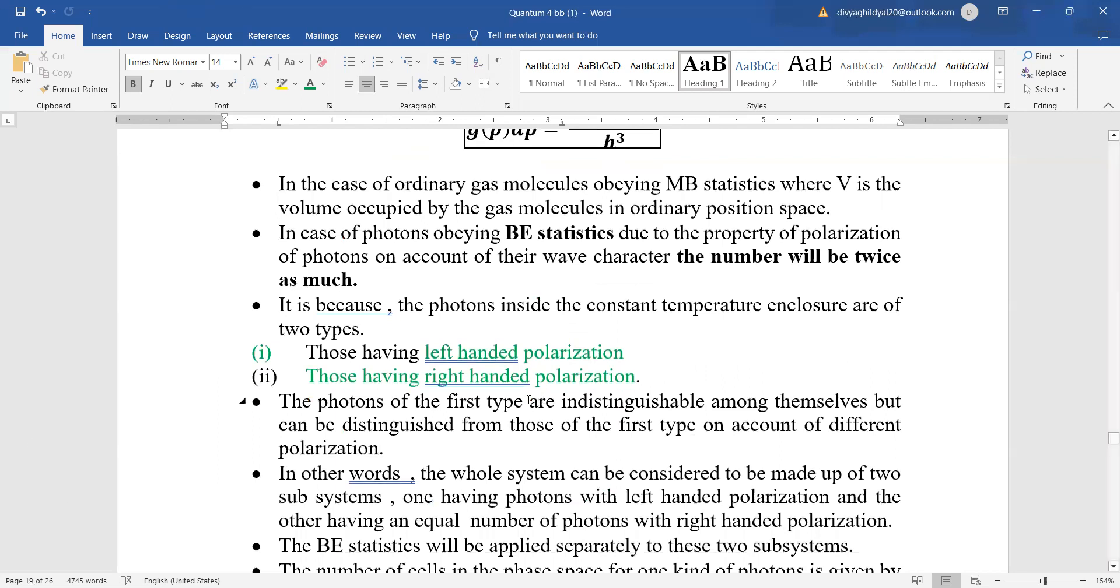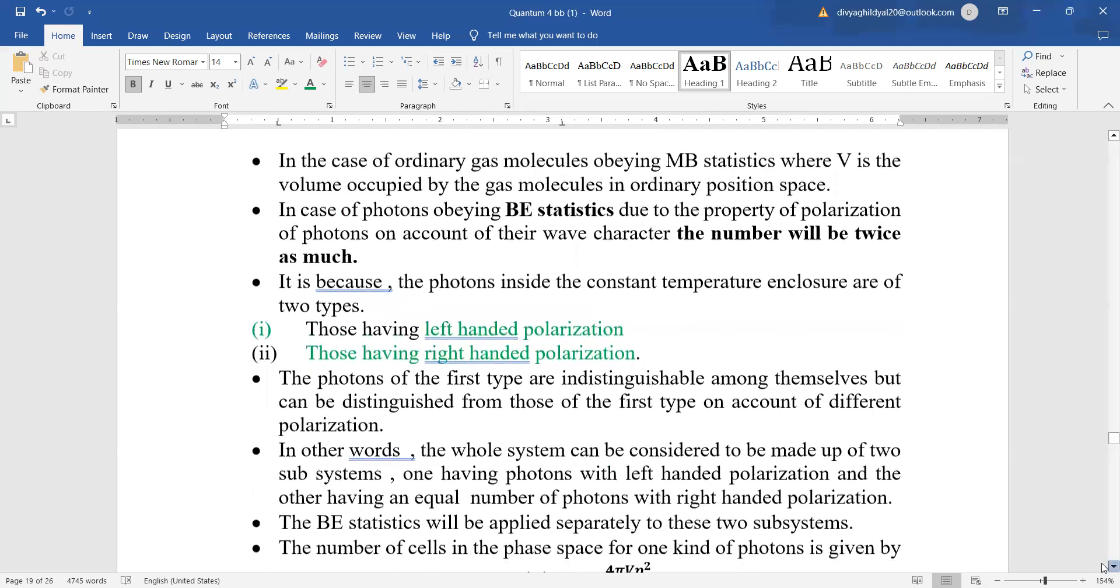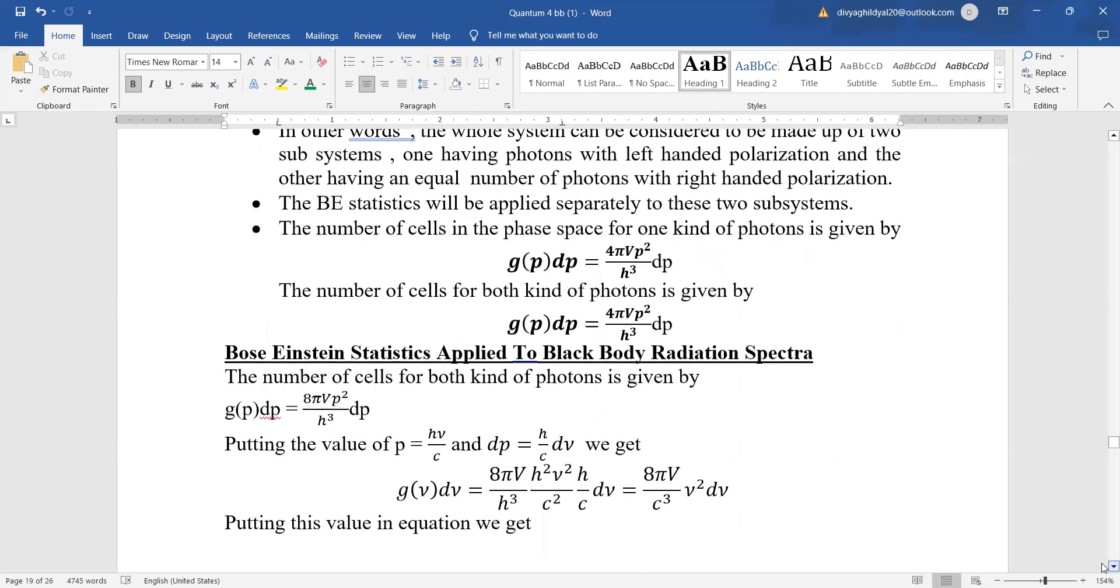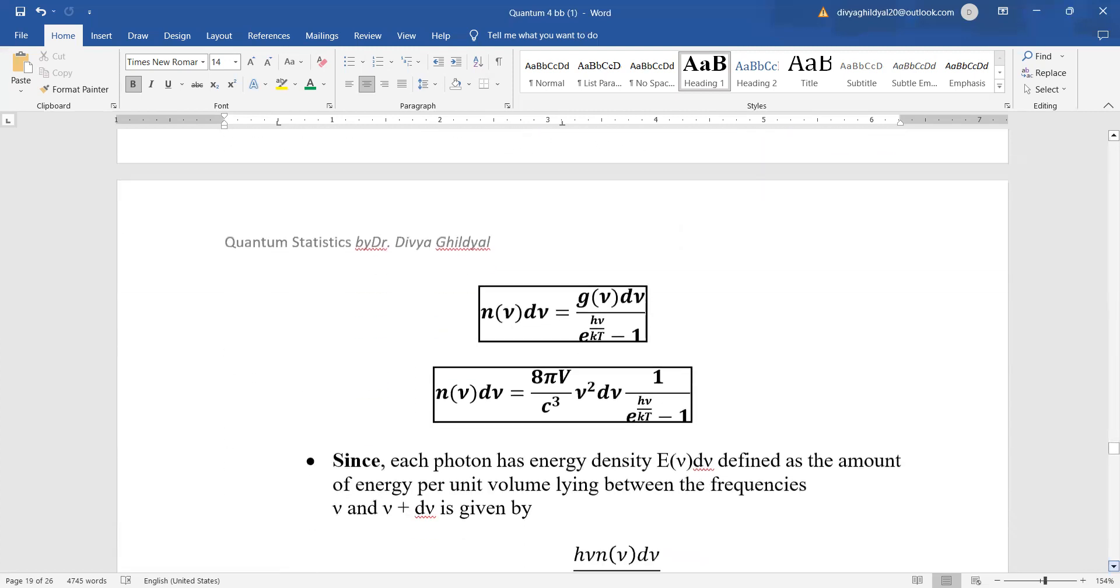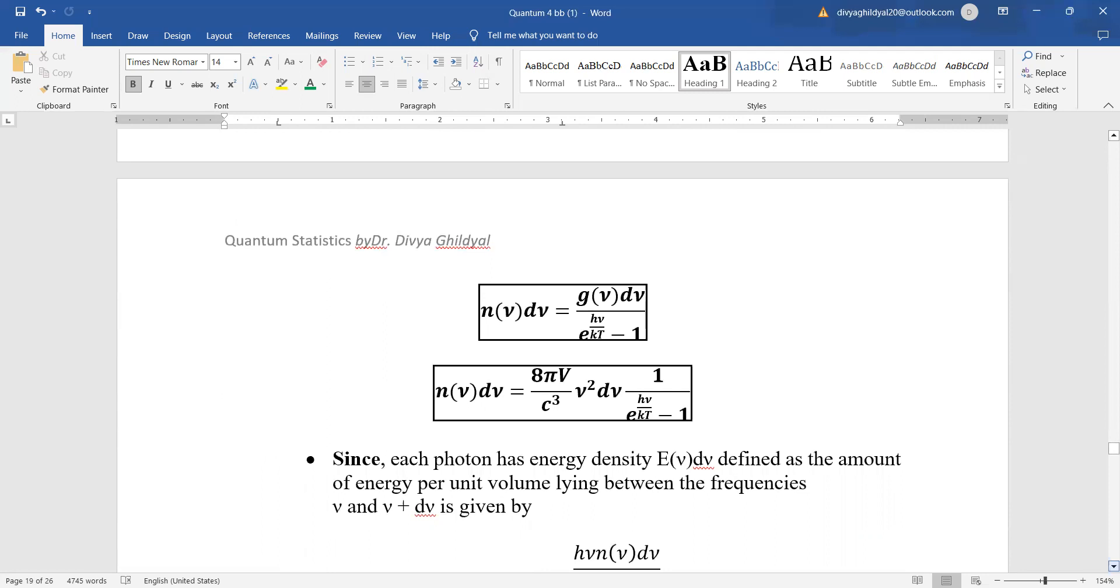The number of cells in the phase space in momentum interval between p and p plus dp is given by gp dp equals 4 pi V p squared dp upon h cubed. In Bose-Einstein statistics the numbers will be twice as much because photons have left-handed and right-handed polarization. Putting p equals h mu by c and dp into this equation, we get n mu d mu equals 8 pi V upon c cubed mu squared d mu times 1 upon e to the power of (h mu by kT) minus 1.